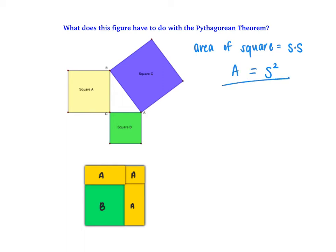If we look at square A, and we say that its side lengths are a, its area would be a squared. Square B, its area would be b squared. And then for C, its area would be c squared.